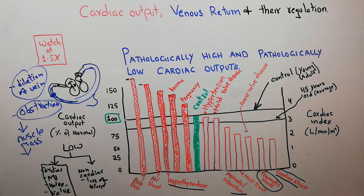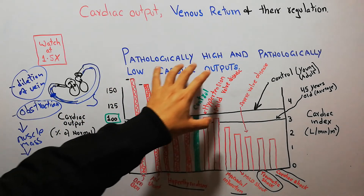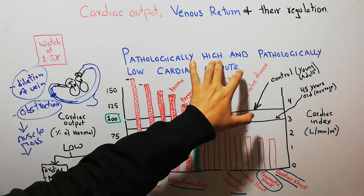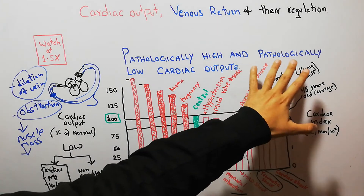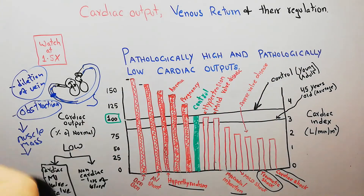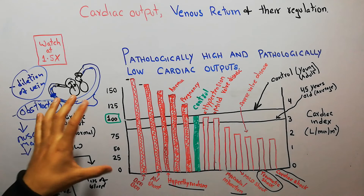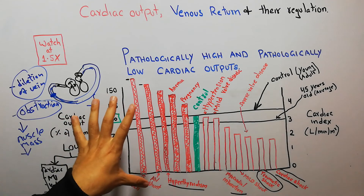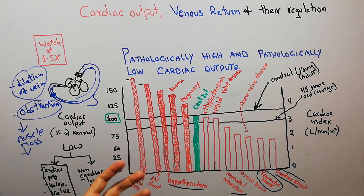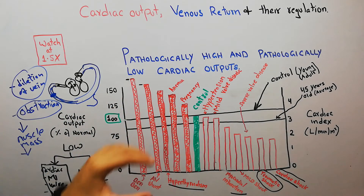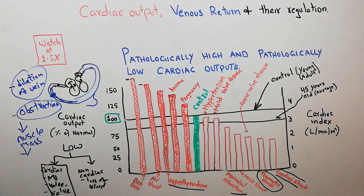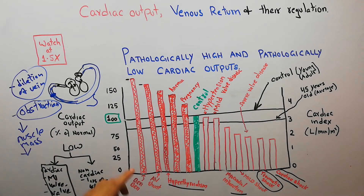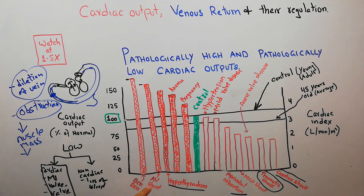Another non-cardiac cause is decreased muscle mass. With increasing age, muscle mass decreases, metabolism also decreases, and as a result cardiac output automatically decreases.